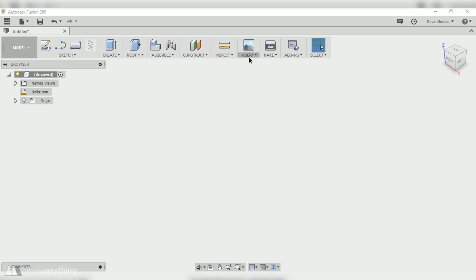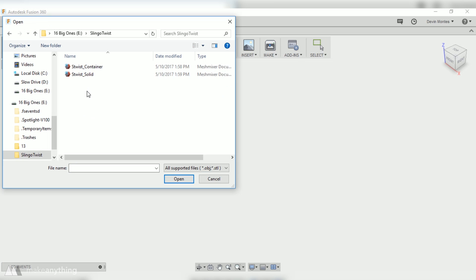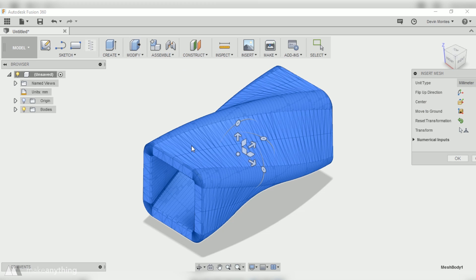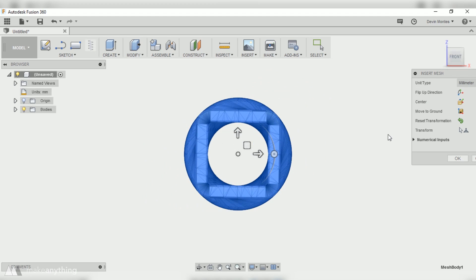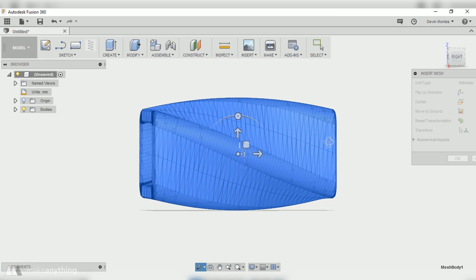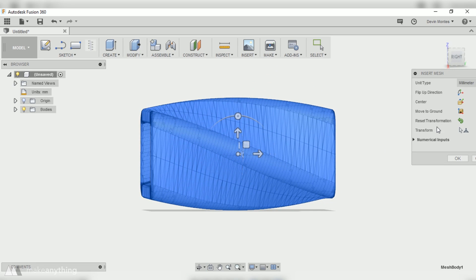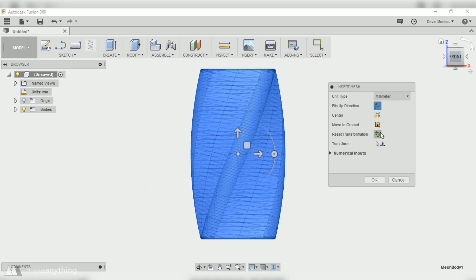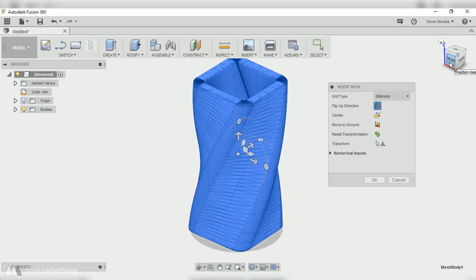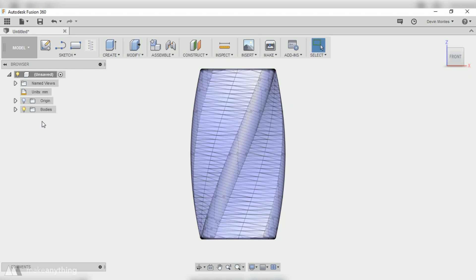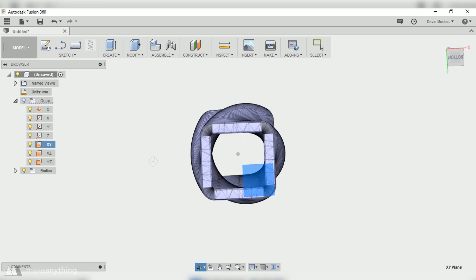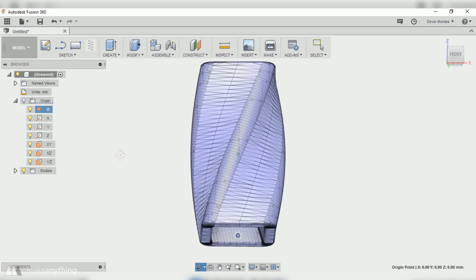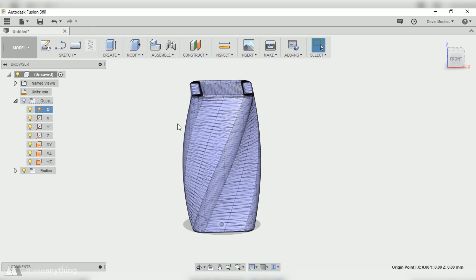You're going to go to Insert Mesh and bring in your file. Here you can see I've got this familiar twisty shape, not too different from my twist containers. So I brought that STL in and then I can flip the direction to make it standing upright, and then I'll also select Move to Ground that way it's sitting on the top plane. I'll hit okay and then I'll just go ahead and confirm that it is in fact sitting on that top plane, and I'll also make sure that it's centered about the origin.